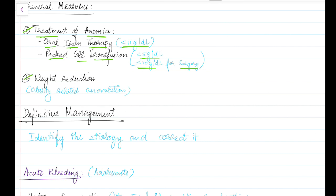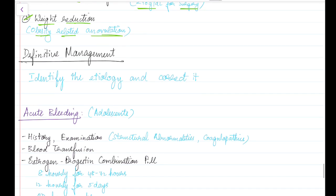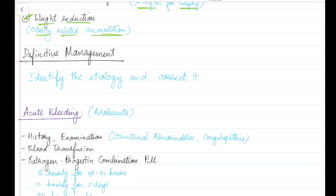Lifestyle modification in the form of weight reduction should be done to prevent obesity-related anovulation, thereby preventing abnormal uterine bleeding related to anovulation. The definitive management involves identifying the etiology and correcting it.